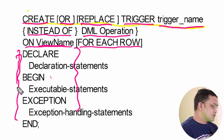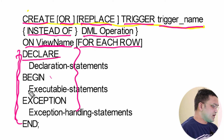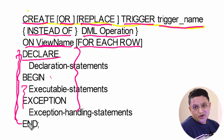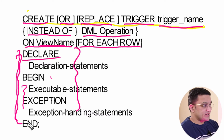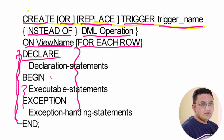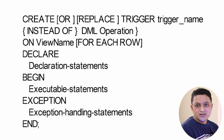In the DECLARE section you mention variable declarations, and in the BEGIN...END section you write the logic to execute when the DML activity is triggered. That completes the syntax of the INSTEAD OF trigger.